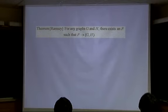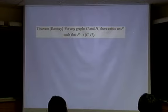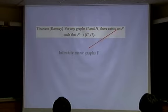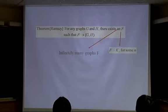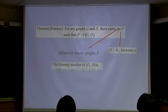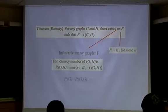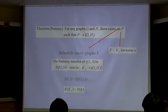The Ramsey theorem says that for any G and H, you can find some F such that F→(G,H) is true. If you can find such an F, then you can find a larger F by adding edges or vertices and it's still true. In particular, you can find a complete graph KN. So the Ramsey number is the smallest N such that KN→(G,H). We write this as r(G,H).